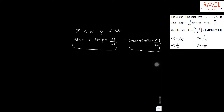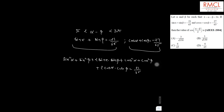If you square both of these equations and add them, then you will have sin squared alpha plus sin squared beta plus 2 sin alpha sin beta plus cos squared alpha plus cos squared beta plus 2 cos alpha cos beta, equal to (21 by 65) whole square plus (27 by 65) whole square.